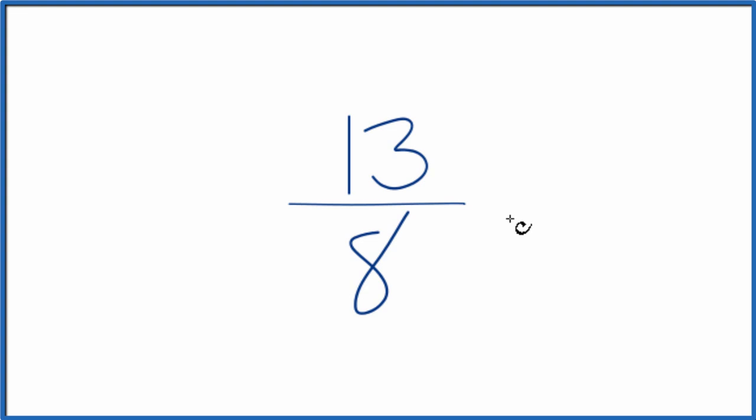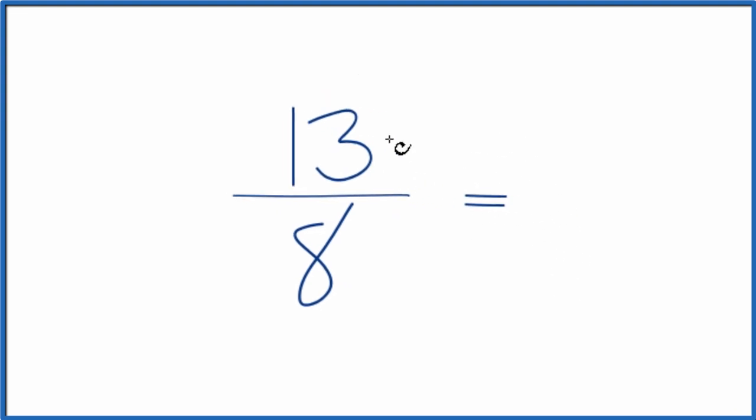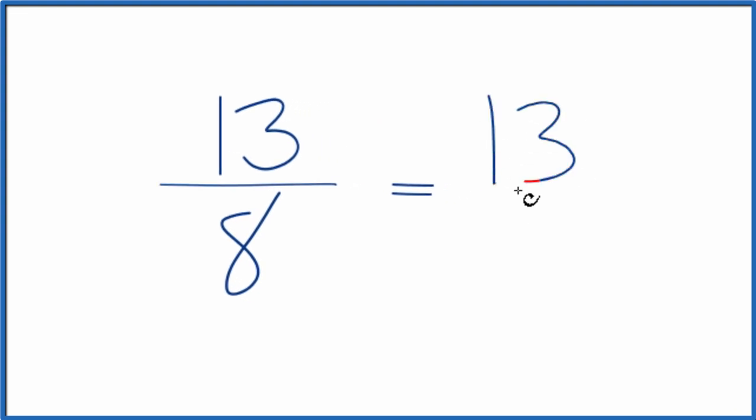To do that, we need to find a common factor, something that goes into 13 and 8 evenly. But the only thing that will go into both 13 and 8 is 1. So if we divide 13 by 1, we get 13. If we divide 8 by 1, we get 8. And that's what we started with.